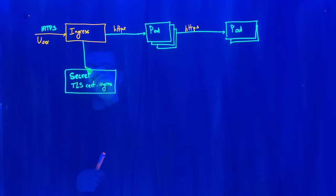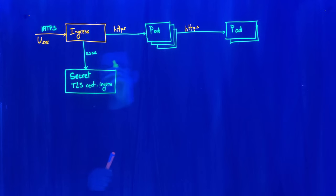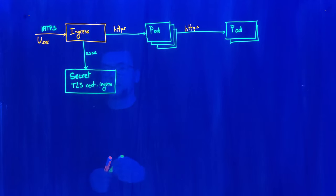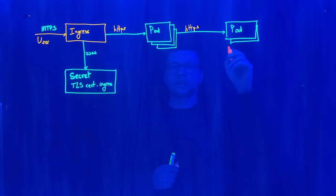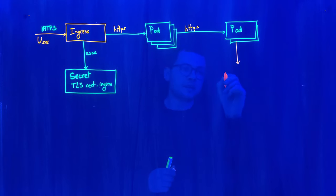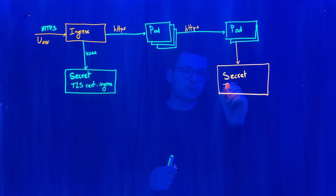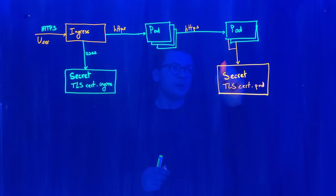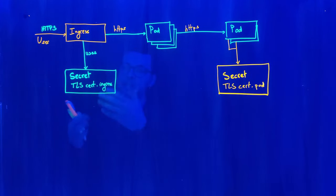For each resource we would have a Kubernetes secret that exposes the TLS certificate — in this case for the ingress. That secret is then consumed by the ingress controller, which mounts it as a volume and exposes it via environment variables so the ingress can consume it. The same applies for the pods: for each deployment, we create a TLS certificate and expose it as a Kubernetes secret, which can be consumed by all pods in that deployment.